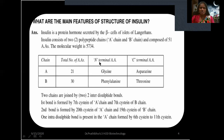In insulin, the N-terminal amino acid of the A-chain is glycine, and the C-terminal amino acid of the A-chain is asparagine. In the B-chain, the N-terminal is phenylalanine and the C-terminal is threonine.